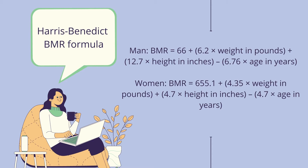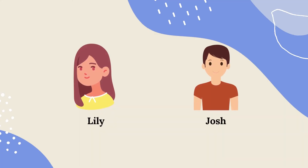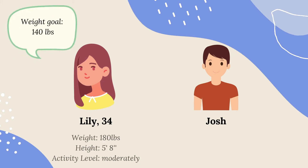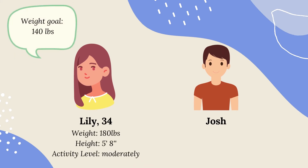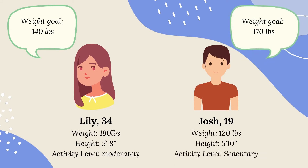If you're a man, use the equation on top. If you're a woman, use the equation on the bottom. Let's have two examples: Lily and Josh. Lily is a 34-year-old woman who weighs 180 pounds and is 5'8". She does moderate exercise per week and her weight goal is about 140 pounds. Josh is 19 years old, weighs about 120 pounds, and is 5'10". Josh doesn't do any exercise, but his weight goal is 170 pounds. Let's plug the information into the BMR formula.